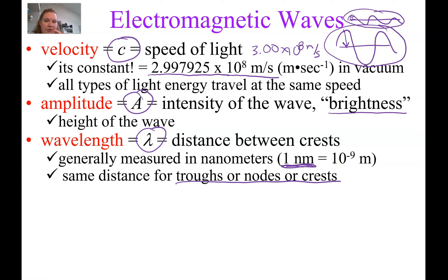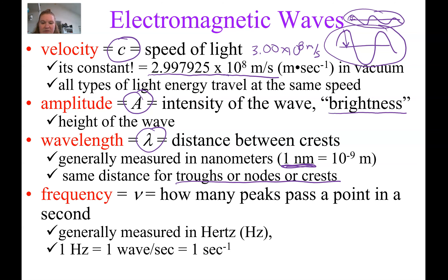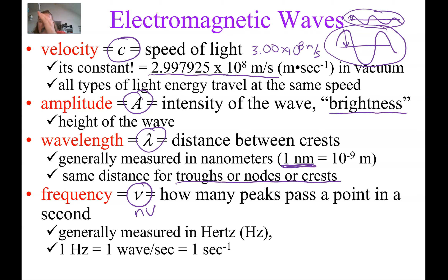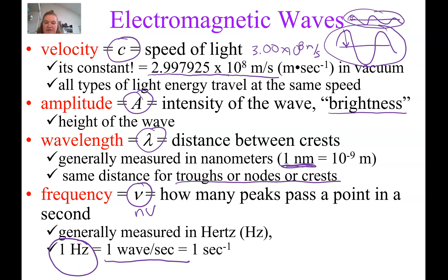The last characteristic is frequency, abbreviated with the Greek letter nu. It's how many peaks pass a point in a second. So every time a peak passes a reference point, we count that — however many peaks there are per second. The units for this are waves per second, which can also be written in hertz.